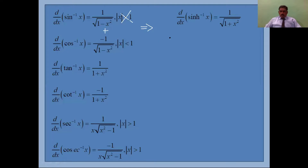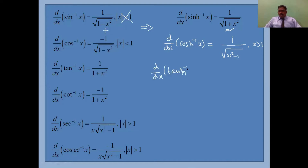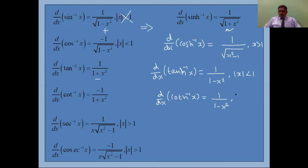Next, d/dx of cosh⁻¹(x) equals 1 over the square root of (x² − 1), where x is greater than 1. Then d/dx of tanh⁻¹(x) equals 1 over (1 − x²), where the modulus of x is less than 1.